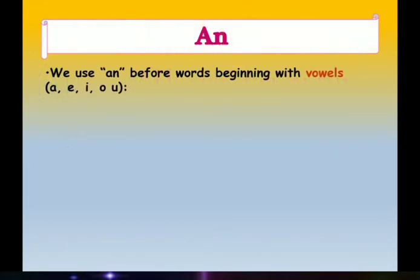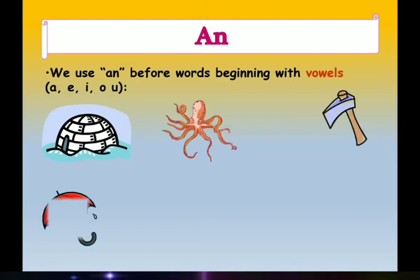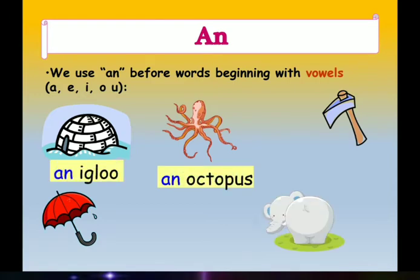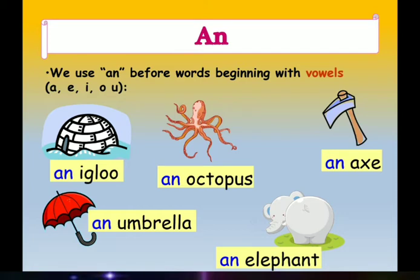An article AN we use before words beginning with vowels. If you observe all these examples, they all are starting with the vowel letters, and when we are pronouncing these words, they are starting with the vowel sound. Igloo, octopus, axe, umbrella, elephant. So because of that, before all these words we will use article AN.